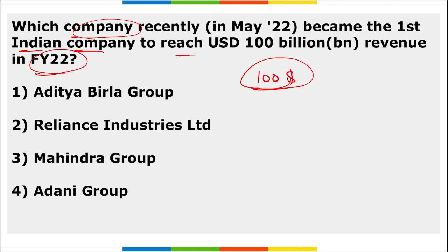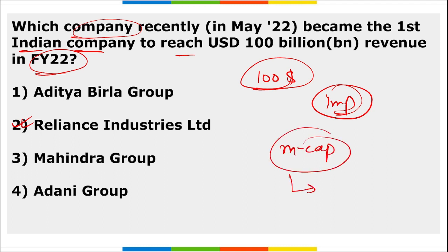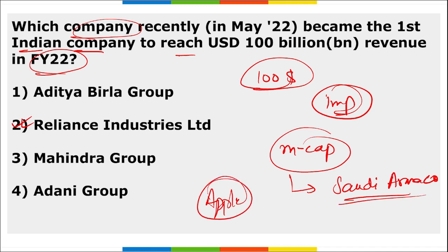Reliance Industries Limited became the first Indian company to reach $100 billion US dollar revenue in fiscal year 2022. As per market cap, Saudi Aramco is the world's most valuable company, having replaced Apple. It is a petroleum company.